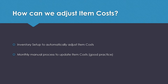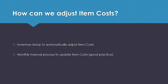Our next question was: how can we adjust item costs within the system? Normally it should be done automatically, so you wouldn't need to be adjusting item costs regularly. But occasionally there might be a scenario where you need to retrospectively adjust item costs — for example, a freight charge or a late invoice on freight that has different posting dates set up in the system.